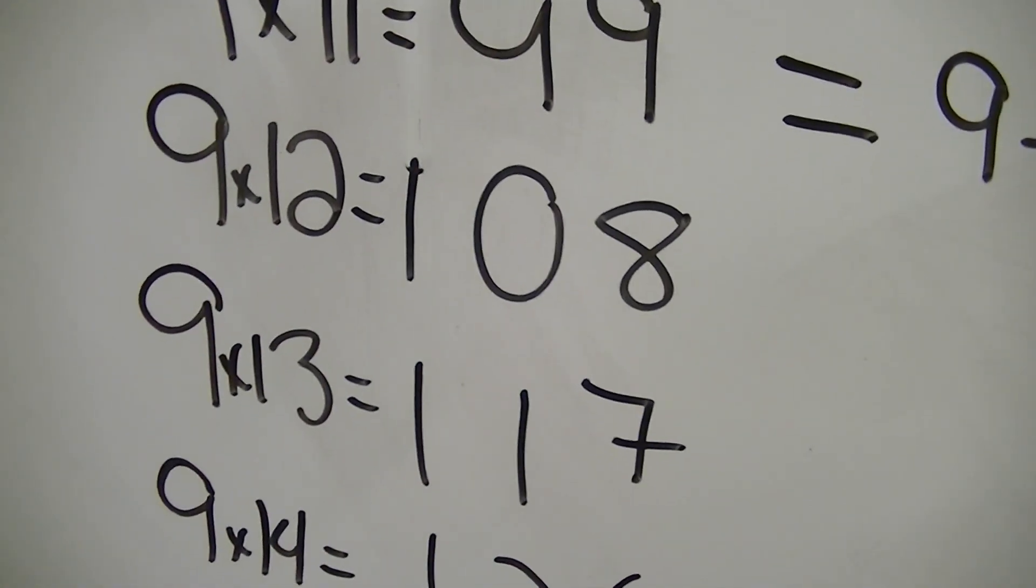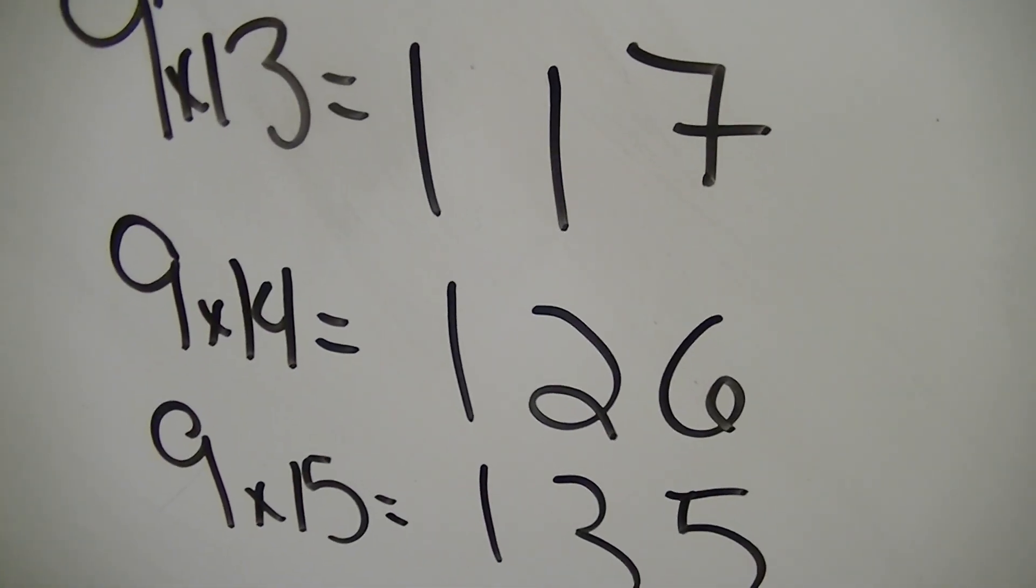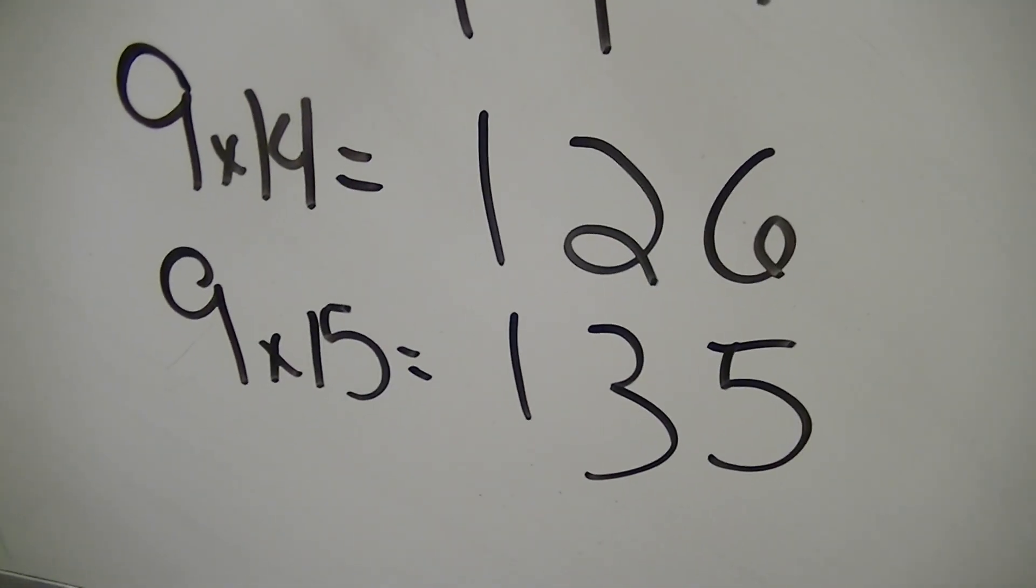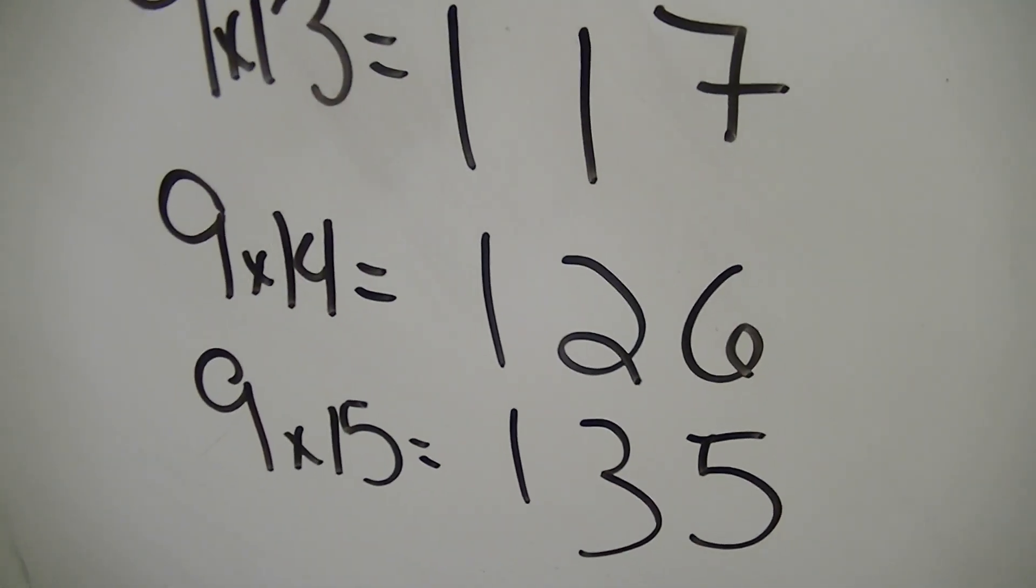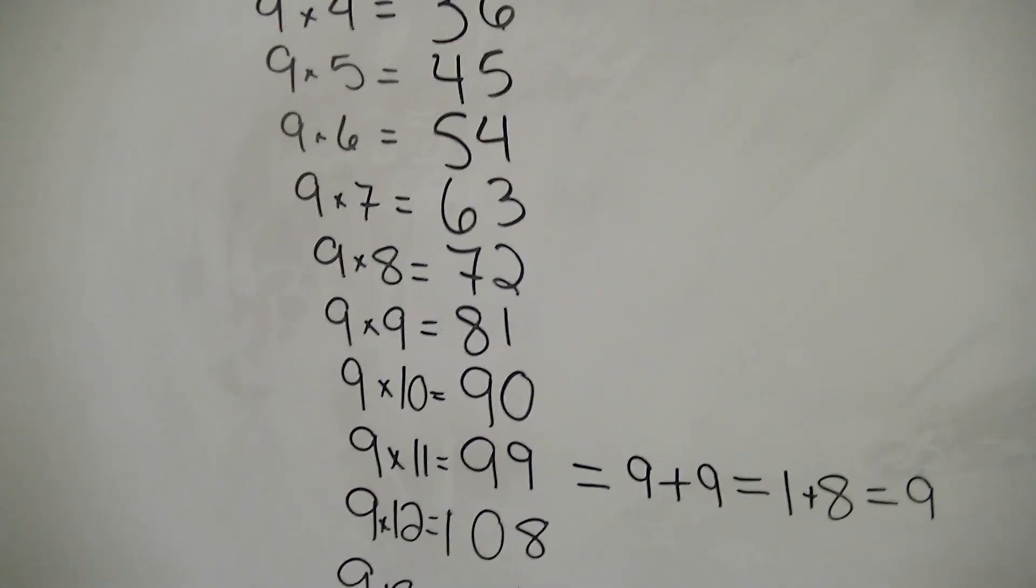Same. One plus zero plus eight is still nine. One plus one plus seven is still nine. One plus two plus six is nine. One plus three plus five still equals nine. So, any multiples of nine are always going to add up to nine.